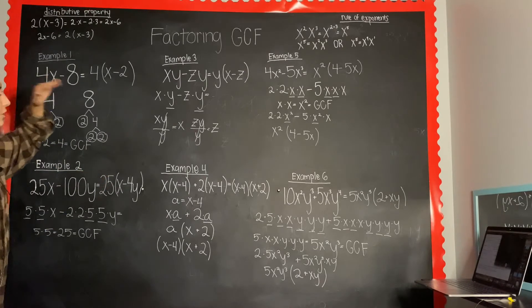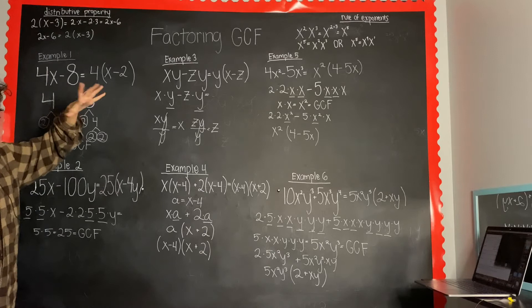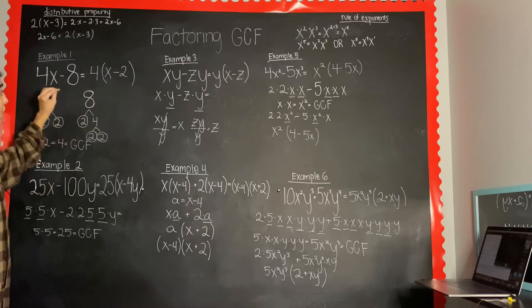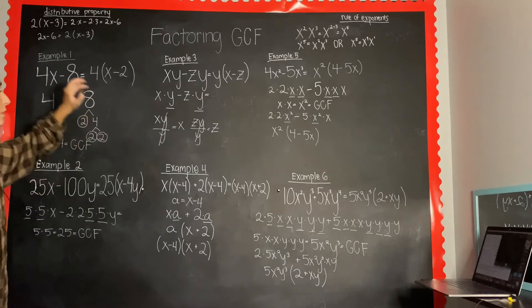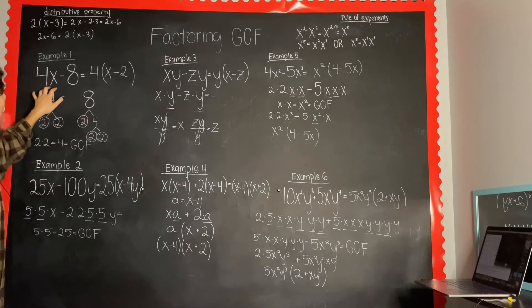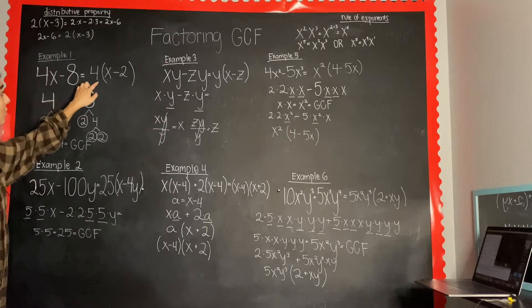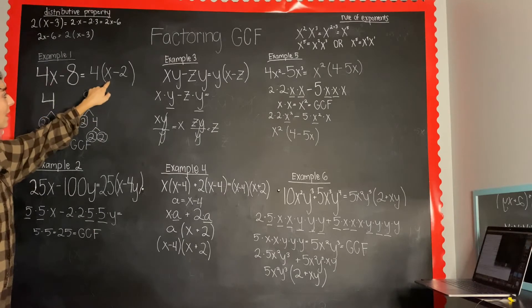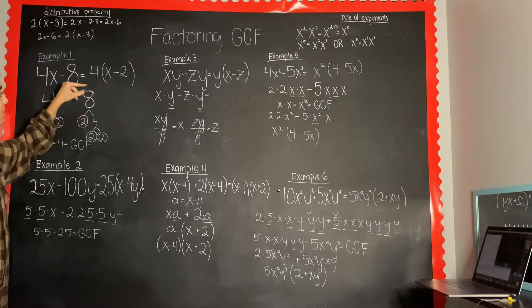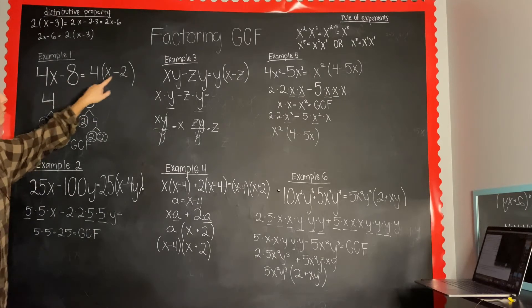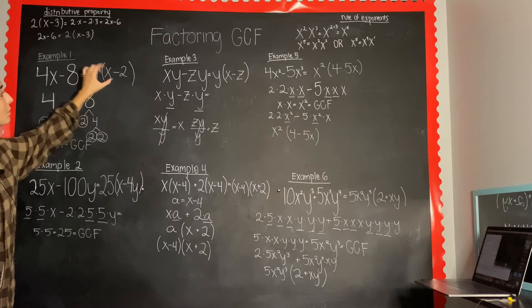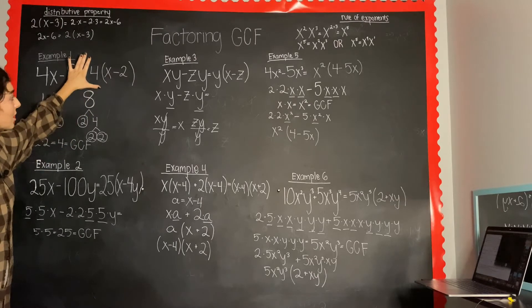Pull out the common factors: 2 times 2 equals 4, and that is your greatest common factor. When we're factoring the GCF we're essentially dividing our expression by it. So 4x divided by 4 is x, minus 8 divided by 4 is 2. That is our answer.